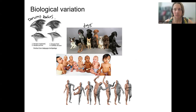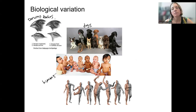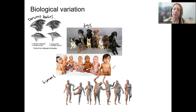There can even be variation within species. Dogs are a great example of this — these are obviously partially human-influenced, giving us all these variable dog breeds. Even in humans, we have huge variation within our species: skin color, hair color, body size and shape, many phenotypes.